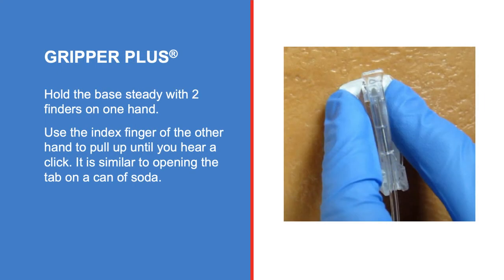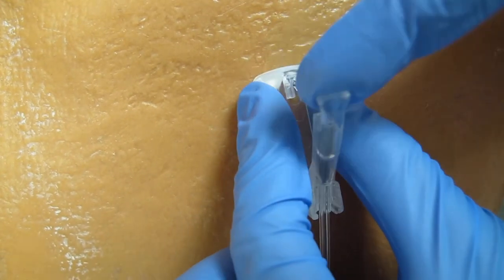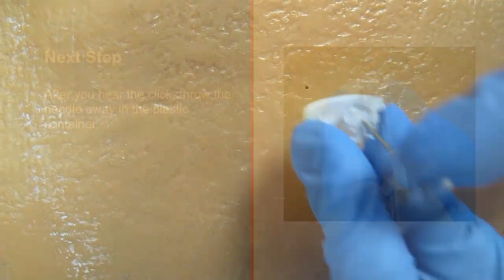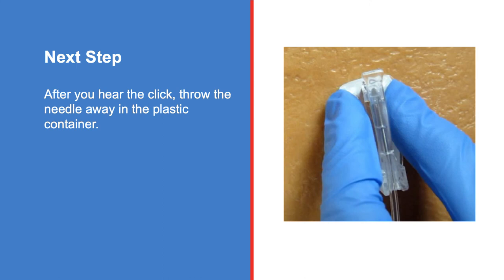For the gripper plus, hold the base steady with two fingers of one hand. Use the index finger of the other hand to pull up until you hear a click. It is similar to opening the tab on a can of soda. After you hear the click, throw the needle away in the plastic container.